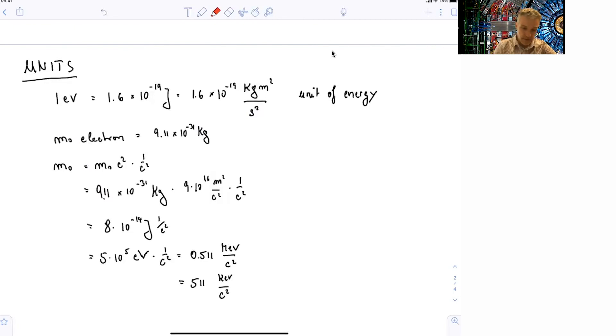So if you just rewrite m not as equal to m not c square times 1 over c square, you find that now we rewrite this and find that the mass is 8 times 10 to the minus 14 joule over c square. Or in units of electron volts, 5 times 10 to the 5 electron volts over c square, which is 0.511 mega electron volts over c square, or 511 kilo electron volts over c square.